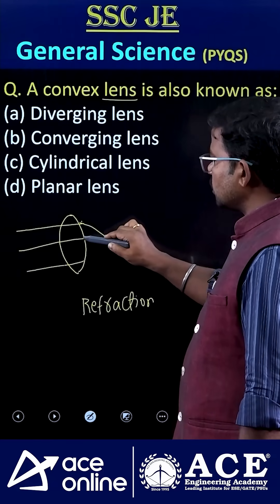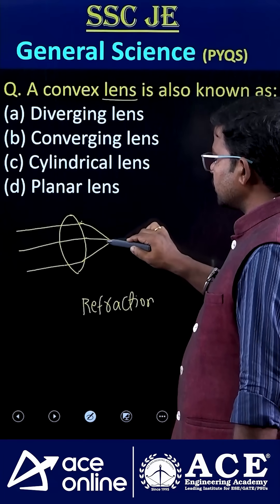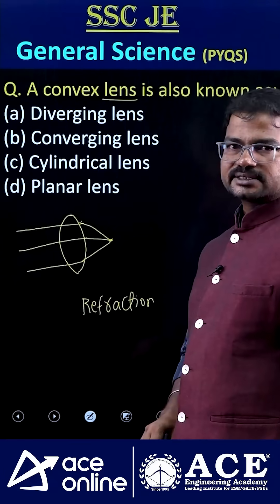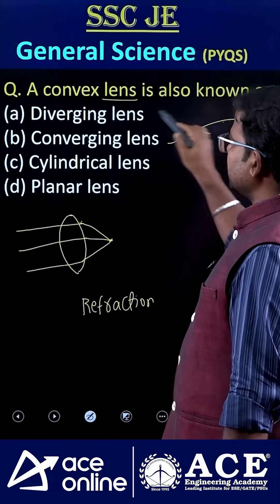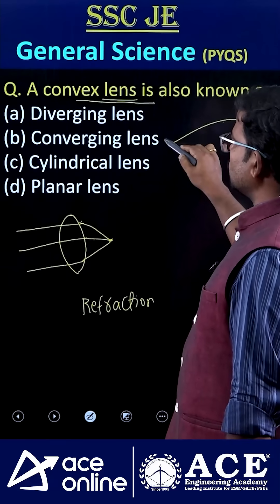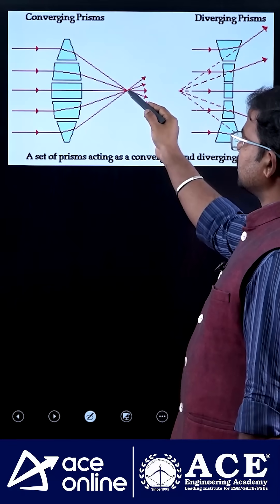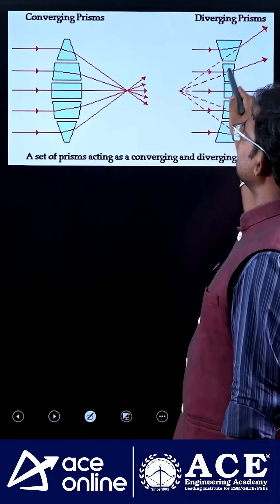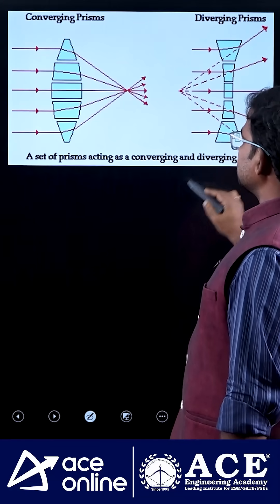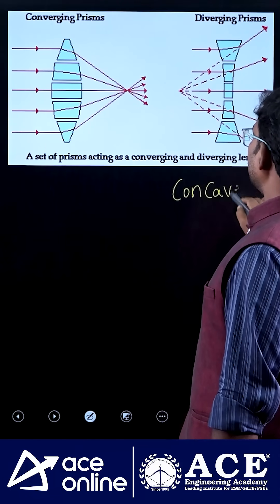Almost all the rays merge at one particular point, so this is called converging. That's why convex lenses are also called converging lenses. As for diverging lenses, those are nothing but concave lenses.